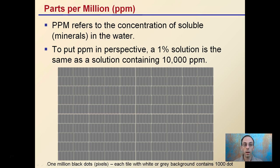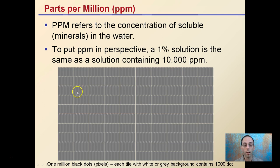Lastly, we have parts per million, which refers to the concentration of minerals in the water. To put PPM in perspective, a 1% solution — or 1 out of 100 — is the same as a solution containing 10,000 parts per million, because 1 out of 100 is the same as 10,000 out of a million. A visual example here shows 1 million black dots or pixels, where each tile with a white or gray background contains a thousand dots, giving you an idea of what a million looks like.